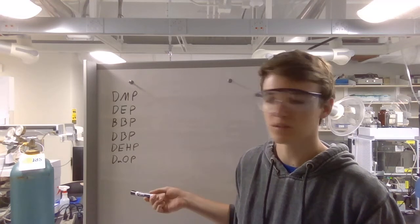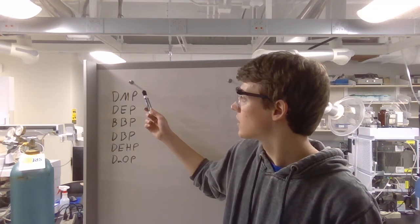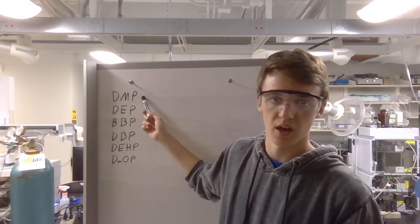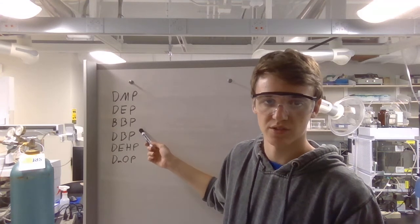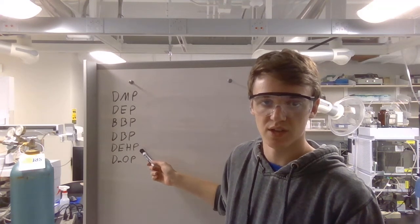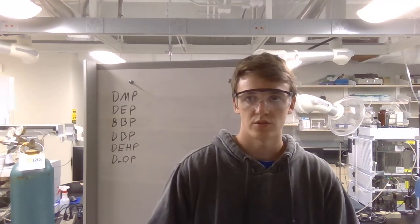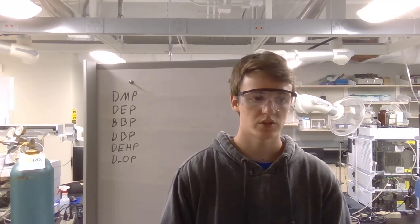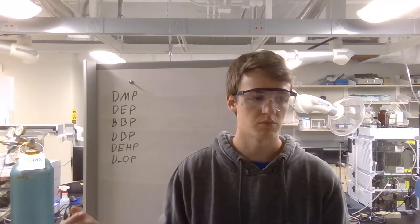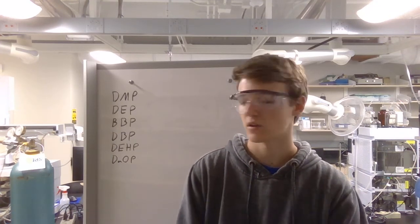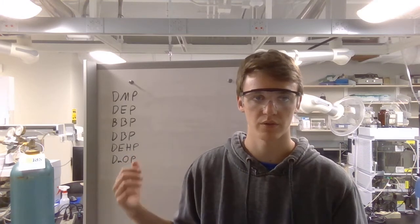So we're looking at six phthalates, and just in order it's dimethyl, diethyl, benzylbutyl, dibutyl, diethylhexyl, and dioctyl phthalate. Those are the six that we're very closely looking at, and of course this stuff can more or less be attributed to other relatively nonpolar phthalates like this.